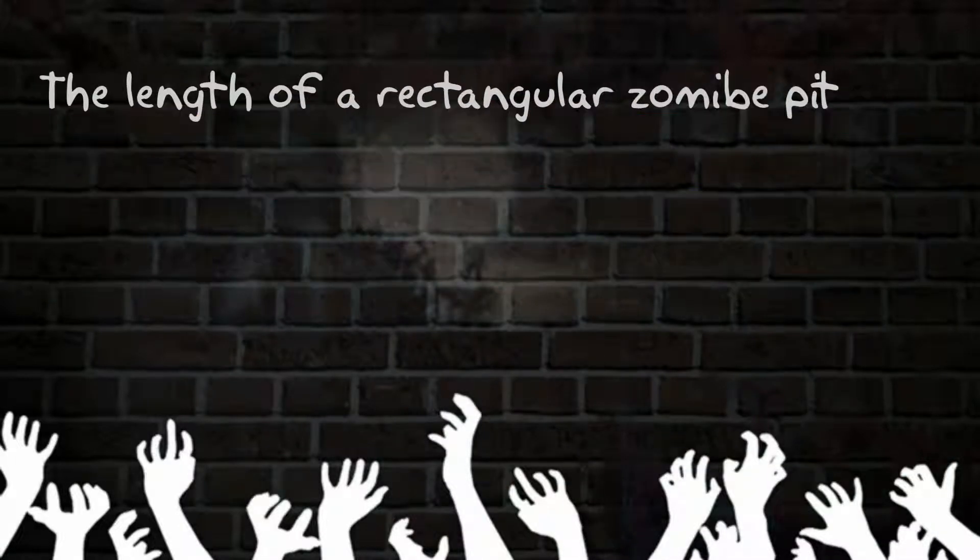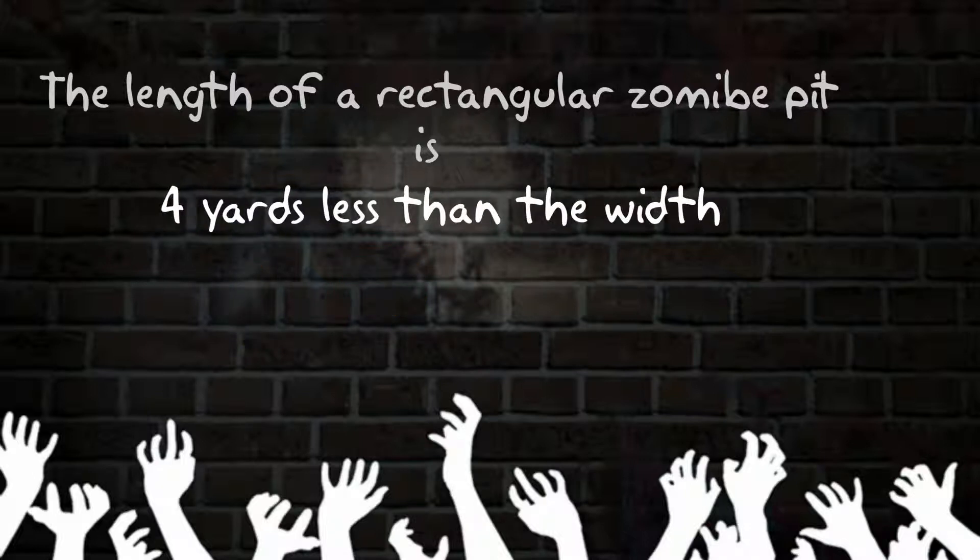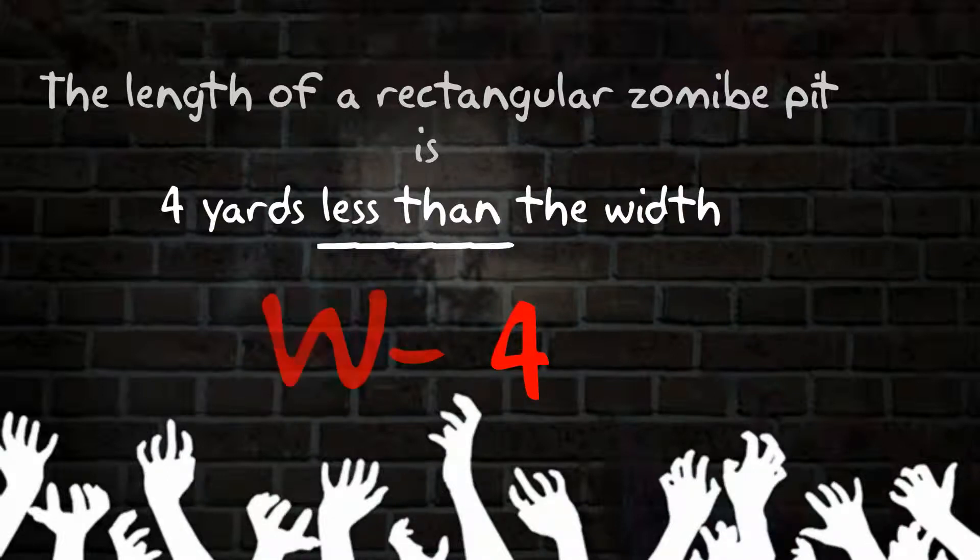We can replace the length of a zombie pit in the ground with L. We can replace the word is with equals. This part of the sentence, four yards less than the width, is the tricky part. When you see the phrase less than, you are subtracting the first part from the second part. In our case, we are subtracting four from the width W.